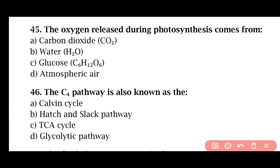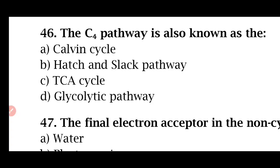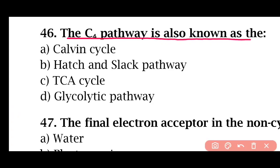Question 45: The oxygen released during photosynthesis comes from — carbon dioxide, water, glucose, or atmospheric air. The correct answer is option B: water. Question 46: The C4 pathway is also known as — Calvin cycle, Hatch and Slack pathway, TCA cycle, or glycolytic pathway. The correct answer is option B. The C4 pathway was discovered by Hatch and Slack, so it is called the Hatch and Slack pathway.